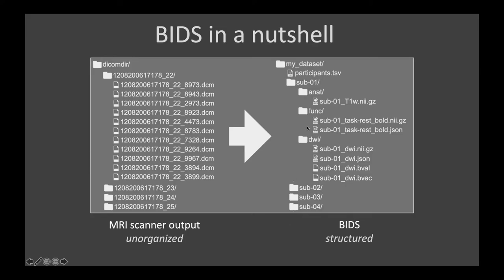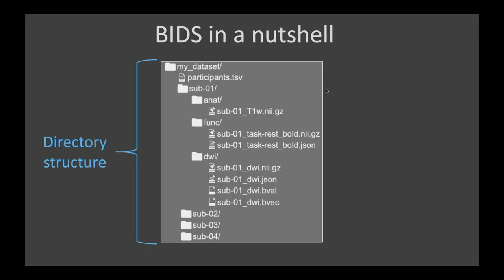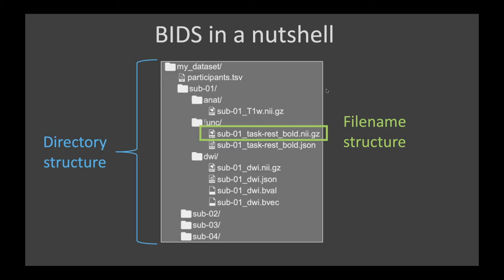Important is a directory structure with some sorting, and then a file name structure. The file name should already describe what is in the file. All files start with the subject identifier. There is also a form of redundancy: we know it's functional data from the directory, but here the keyword 'bold' again appears in the filename. In the DWI folder, all files are also identified as DWI. This redundancy provides more and more checks.